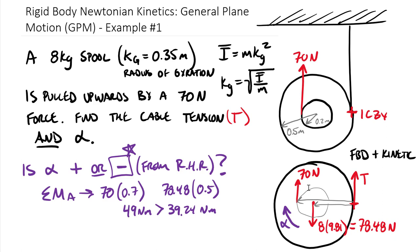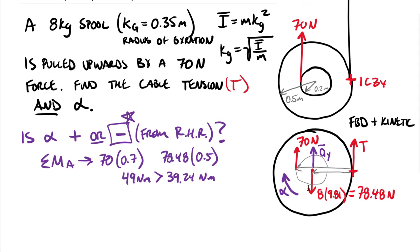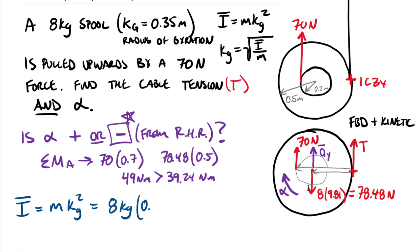Because alpha is negative (spool going up), the centroidal acceleration a-bar sub y should be drawn upward to agree. We also compute I-bar: mass times k sub g squared equals 8 kilograms times 0.35 squared equals 0.98 kilogram-meter squared. Now we have two options: sum moments about centroid G, or sum moments about contact point A.